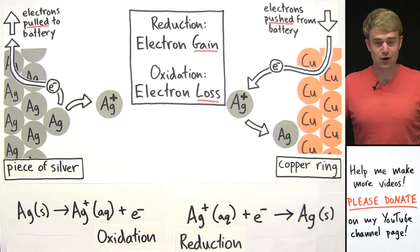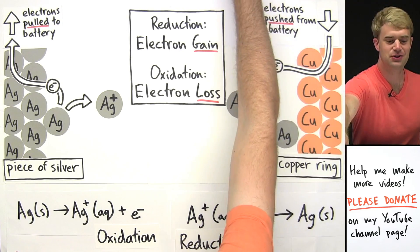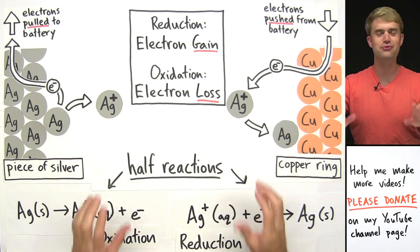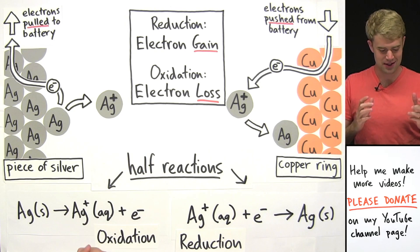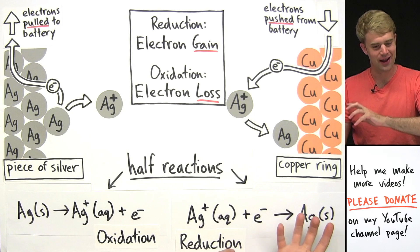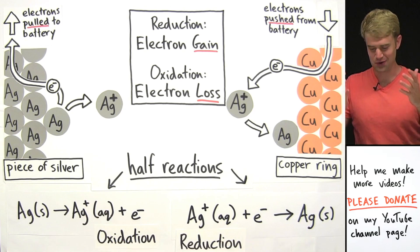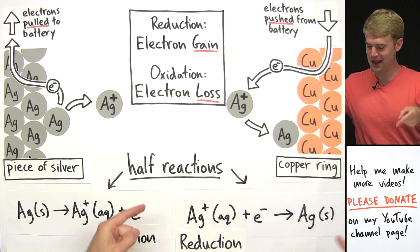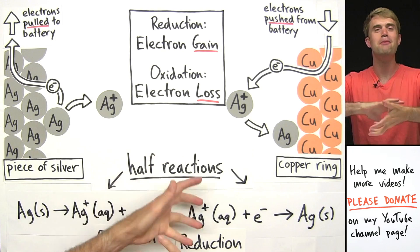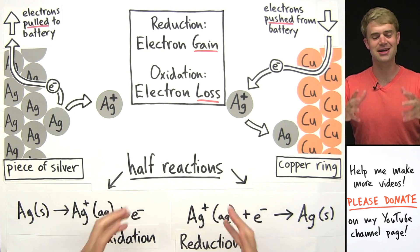Now, both of these equations that we wrote are actually called half-reactions, because each one of them tells us half the story of the oxidation-reduction process. Here's the oxidation part, here's the reduction part, put them together, we get oxidation-reduction.